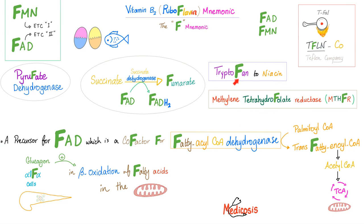B2 is also helpful to convert tryptophan to niacin. It's also a cofactor for methylenetetrahydrofolate reductase. Additionally, B2 is a precursor for FAD, which is a cofactor for fatty acyl-CoA dehydrogenase. This is beta oxidation — it converts palmitoyl-CoA into trans-fatty enoyl-CoA, which leads to acetyl-CoA and acyl-CoA. Acetyl-CoA enters the Krebs cycle and you have energy.